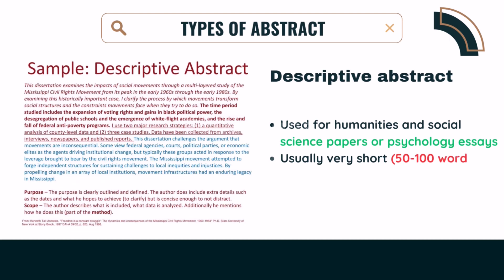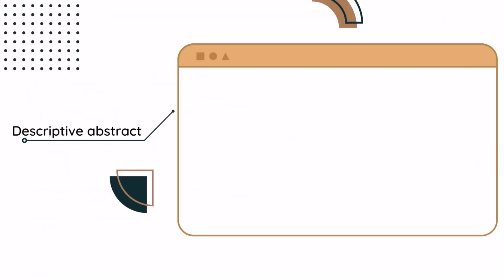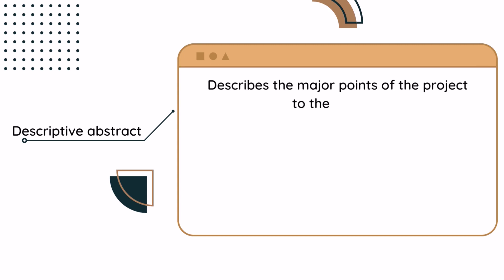Descriptive abstract. Descriptive abstracts are generally used for humanities and social science papers or psychology essays. This type of abstract is usually very short, 50 to 100 words. Most descriptive abstracts have certain key parts in common — they describe the major points of the project to the reader.